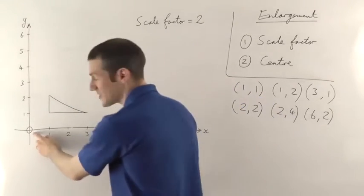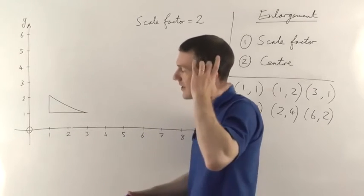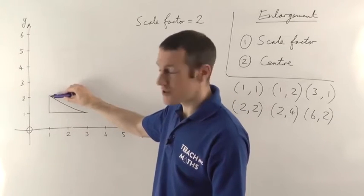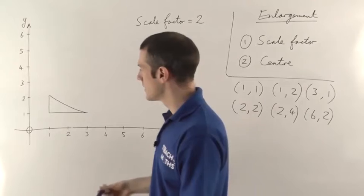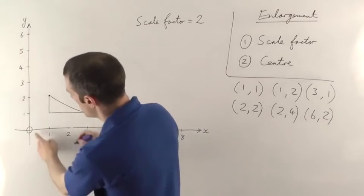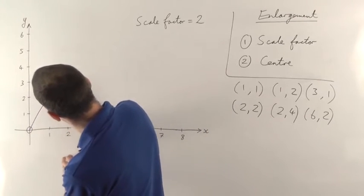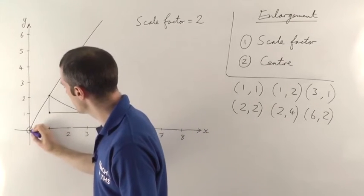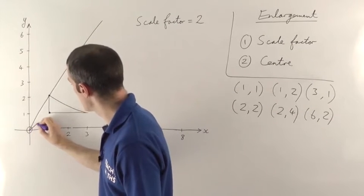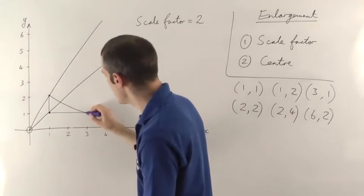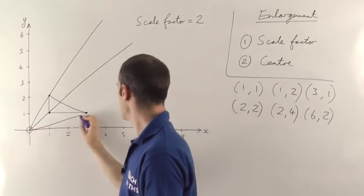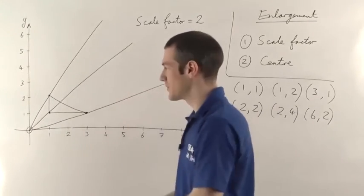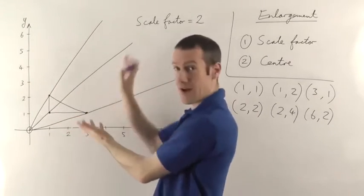I'm going to leave the centre of enlargement as the origin but show you the other method so you can compare them. Essentially what you have to do is, with a ruler, draw a straight line from the origin through each corner of the shape and then off into the distance. So from the centre of enlargement, through each corner of the shape and off into the distance. You draw lines through each corner of the shape — if it's a square you'd draw four lines; since I've got three corners, I'm drawing three lines.